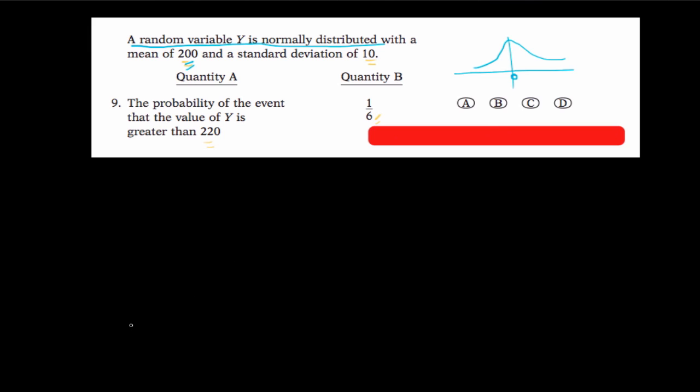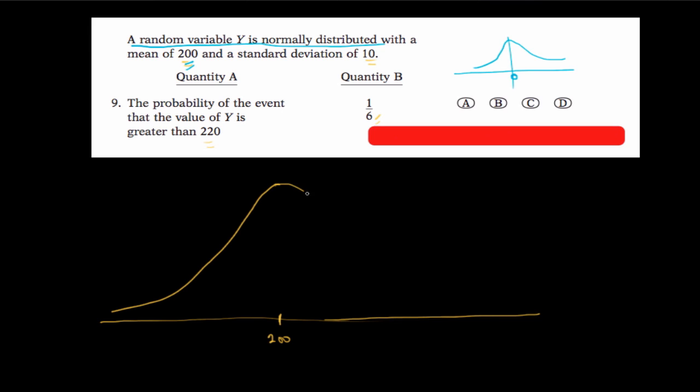How do I represent this on a graph? Let's assume this is our graph — just a sketch. Let's assume this point here is 200. We are told the mean is 200, so we draw the curve centered here. This is an example of a normal distribution curve, and this part corresponds to the mean.